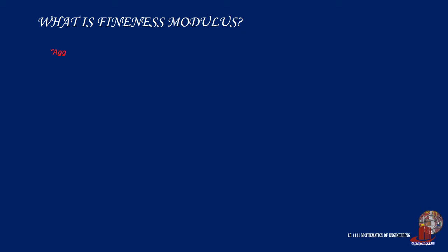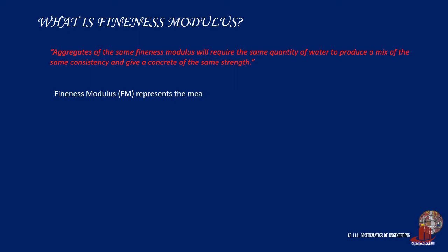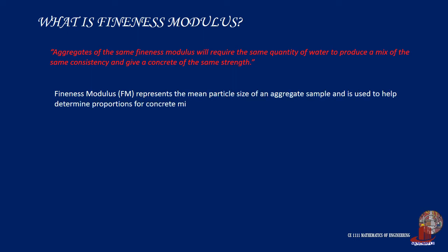The premise: aggregate of the same fineness modulus will require the same quantity of water to produce a mix of the same consistency and give concrete of the same strength. Fineness modulus represents the mean particle size of an aggregate sample and is used to help determine proportions for concrete mix design. It also helps to characterize concrete aggregates based on their fineness, making it easier to estimate mix design proportions.